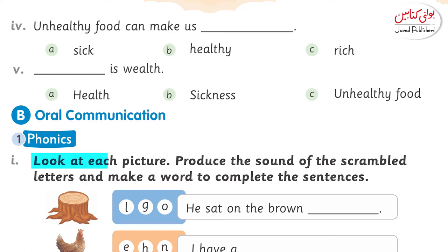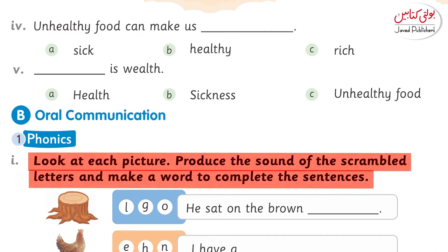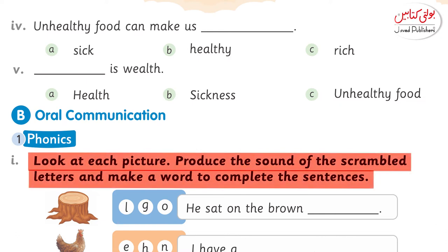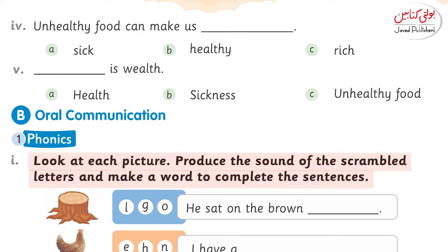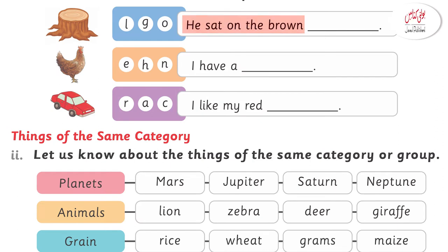Oral communication. Look at the picture. Produce the sound of the scrambled letters and make a word to complete the sentences. Here you have a picture with some scrambled words and a sentence in front of it. You have to unscramble the word and fit it into the sentence. The first picture is of a very big tree — we call it a log. He sat on a brown log.